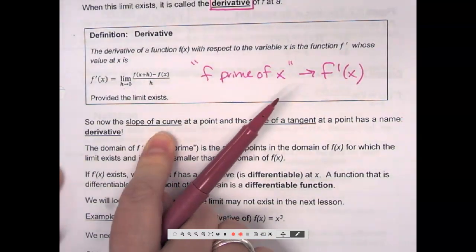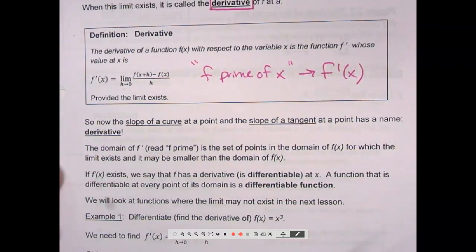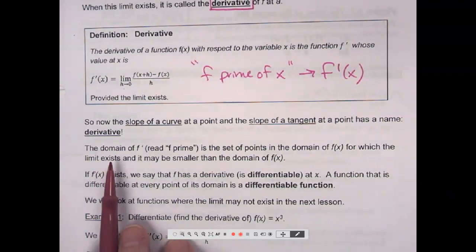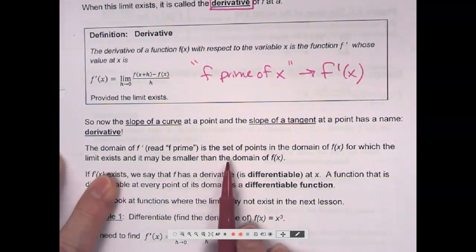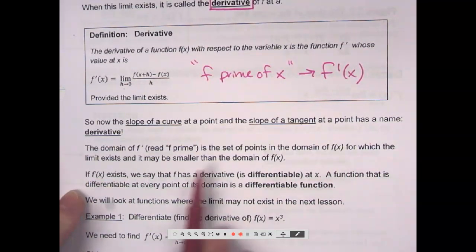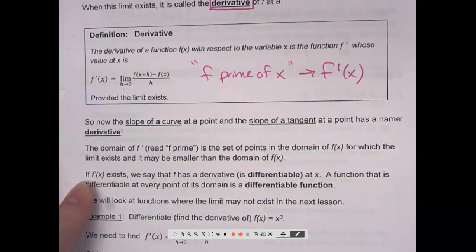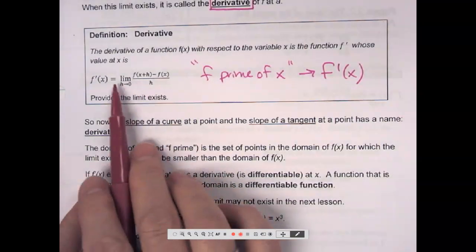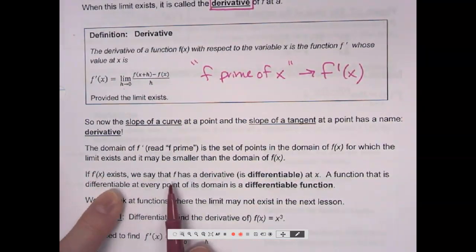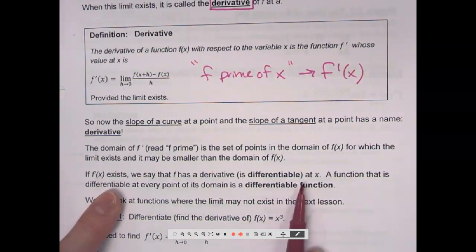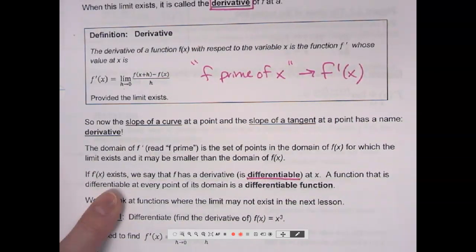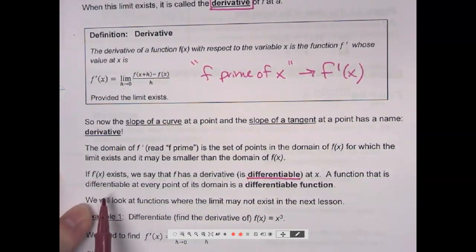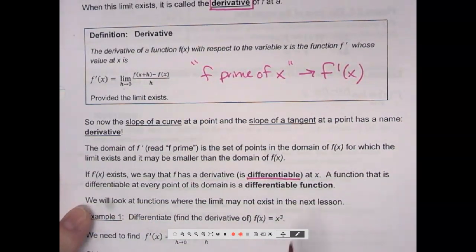So derivative means slope of a curve. Derivative means slope of a tangent. Derivative also means instantaneous rate of change. The domain of f prime is the set of points in the domain of f of x for which the limit exists and it may be smaller than the domain of f of x. If f prime of x exists, in other words, if I do this whole thing and get a number, then we say that f has a derivative or is differentiable at x.